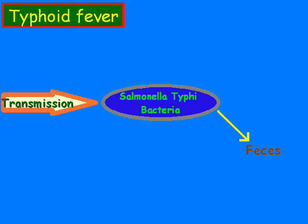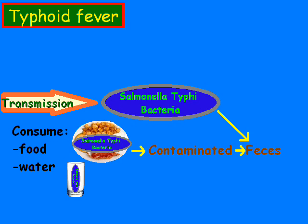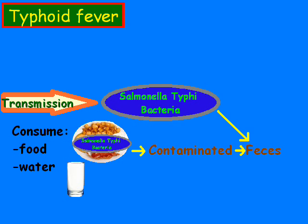On the other end of the spectrum, we have people that consume food — and it could be any type of food — and they also consume water. That water becomes contaminated with feces, and those feces contain the salmonella typhi bacteria, which gets into the food and the water, and then it becomes ingested by humans. And that's how typhoid fever is transmitted.